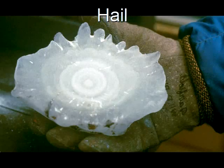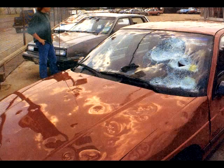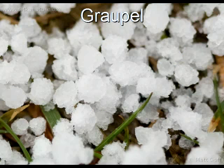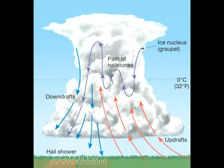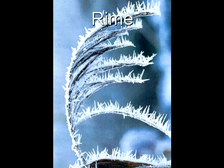Hail refers to precipitation in the form of hard, rounded pellets or irregular lumps of ice. In extreme cases, hail has been found with a diameter of over 5 inches and weighing more than 1.5 pounds. Ice pellets with a diameter of less than 5 mm are called grapple. Hail is produced in large cumulonimbus clouds when ice pellets grow by collecting supercooled water as they are moved upward and downward. Each trip through the supercooled section of the cloud adds a new layer of ice.